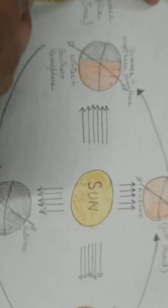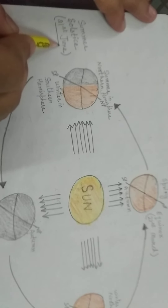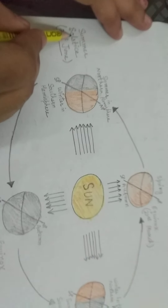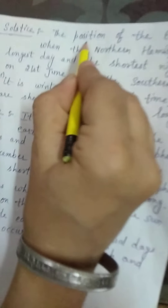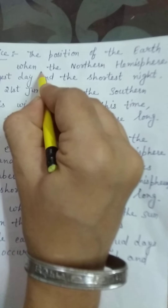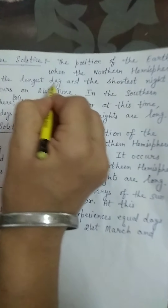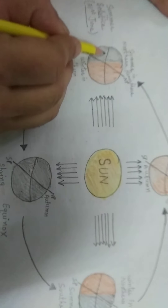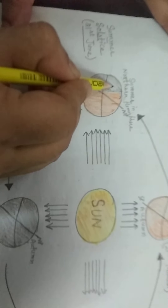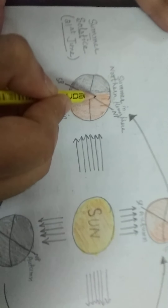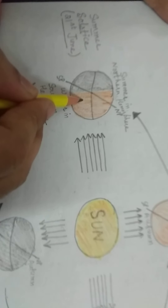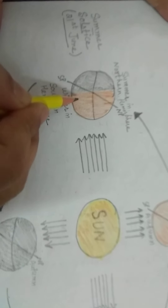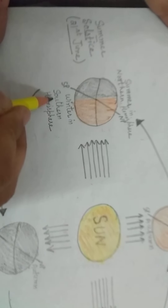We start from summer solstice. 21st June represents summer solstice. Summer solstice means the position of the earth when the northern hemisphere has the longest day and shortest night. At this time, the southern hemisphere has the shortest days and longest nights — there is winter in the southern hemisphere.